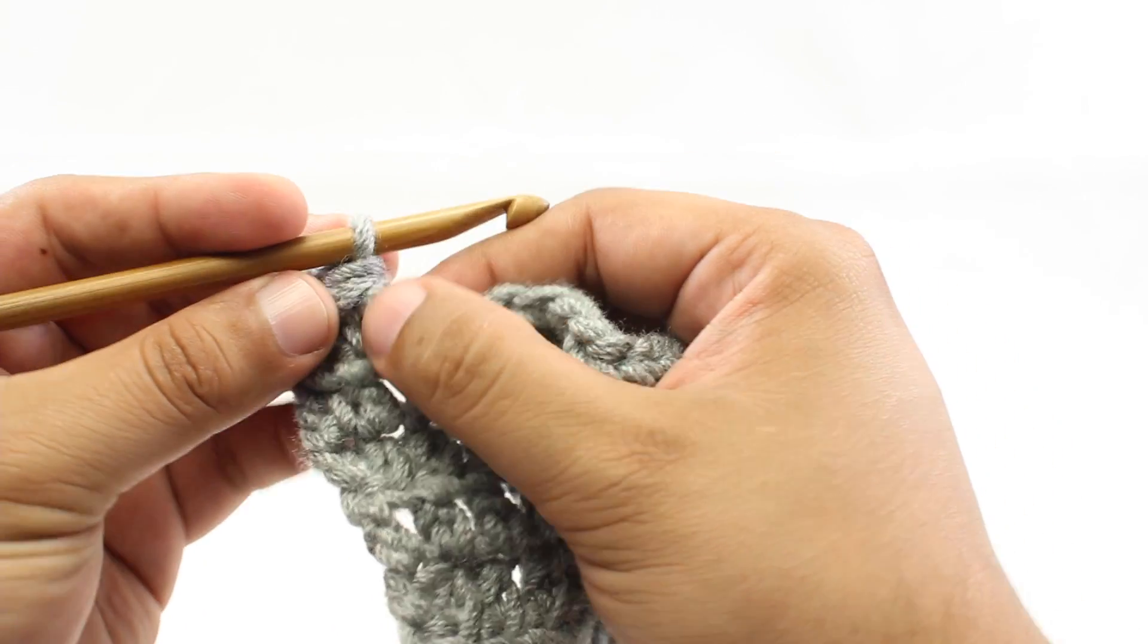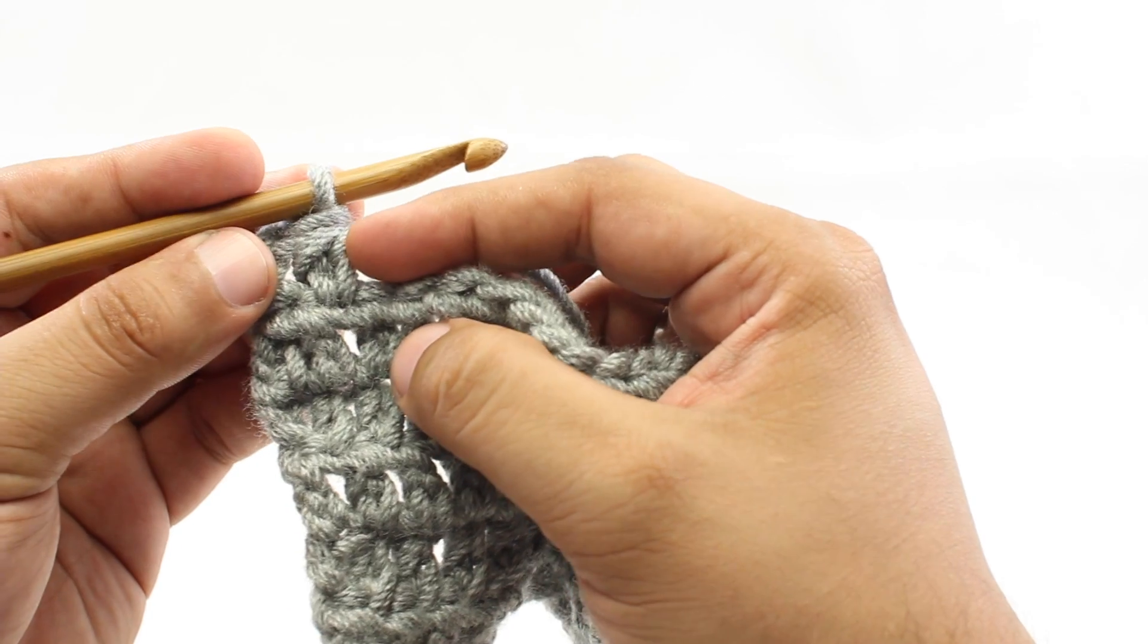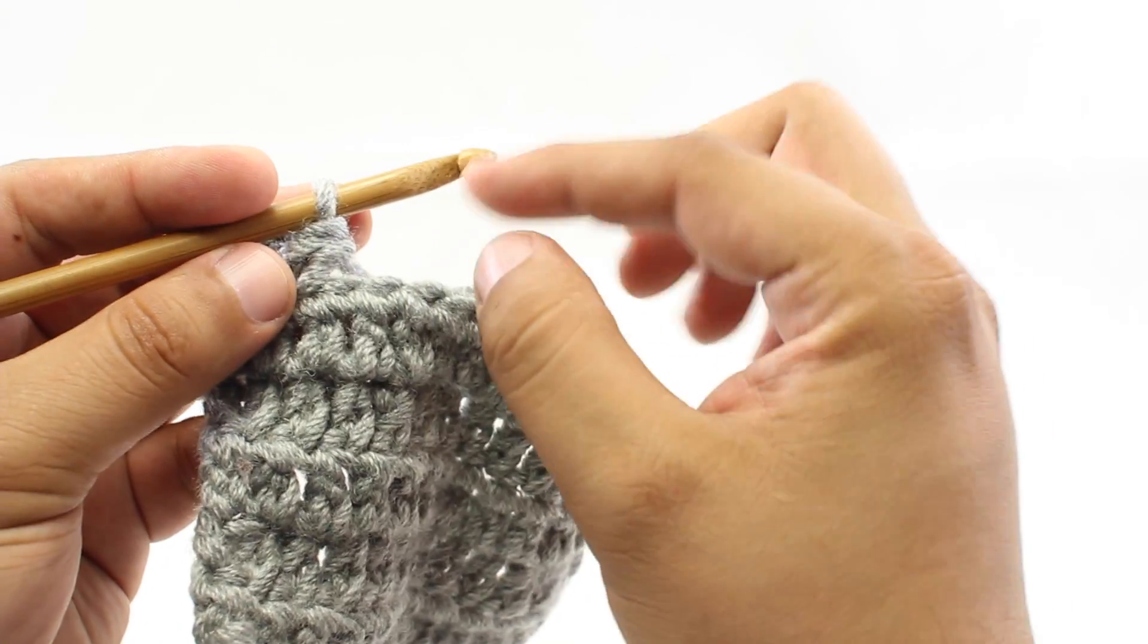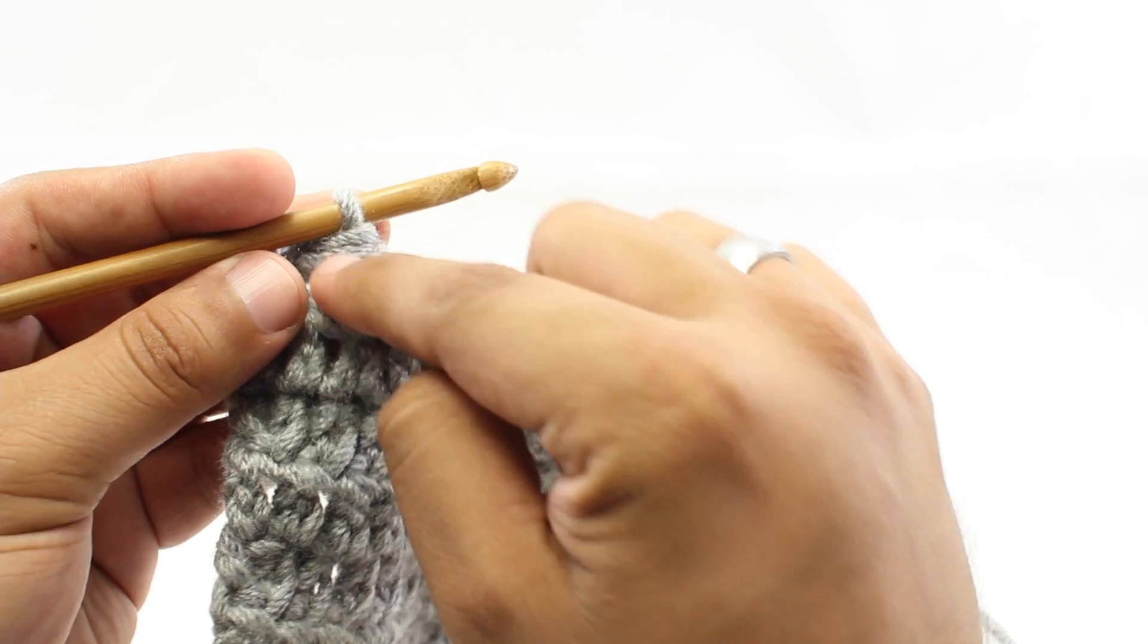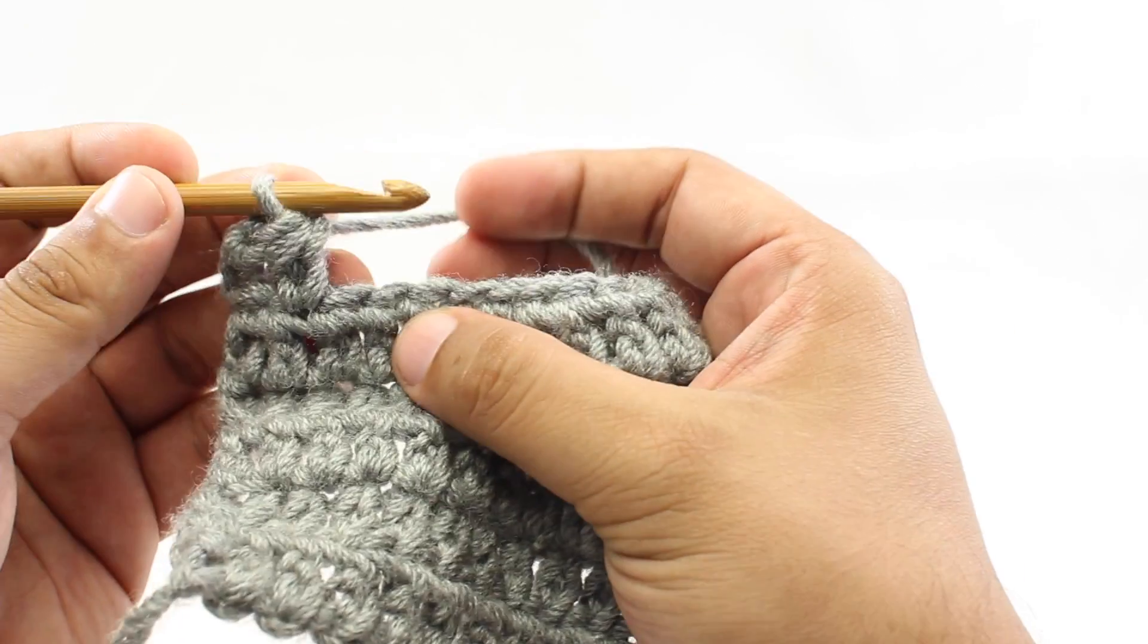Now if you're familiar with the foundation half-double crochet, where we make our foundation chain while doing half-double crochets, it's the exact same process. So let's do that for you again.